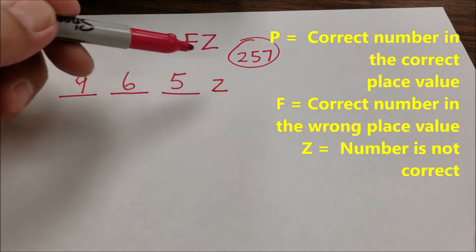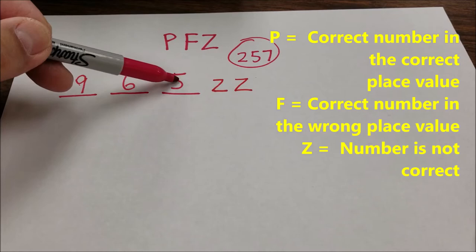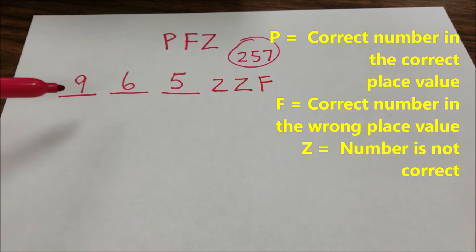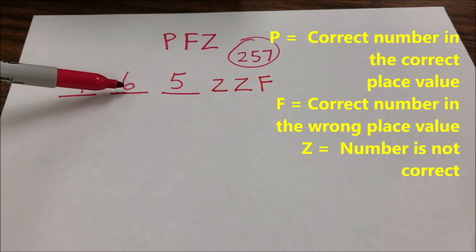6, same thing. That's not in the number. They have the correct 5, but it's in the wrong place value. It should be in the 10s. So this is where they would get an F. So according to the rules, the person knows, okay, 9 is not in the number. 6 is not in the number. 5 is the correct number, but it's in the wrong spot.